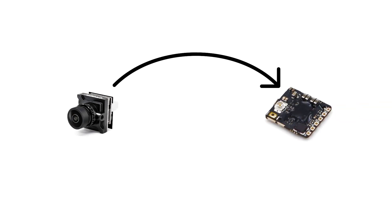It also has latency. An FPV camera records the video and transmits it to an FPV video transmitter in the form of a low signal wave.